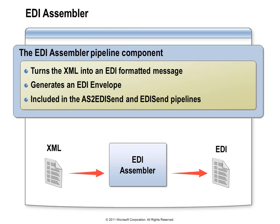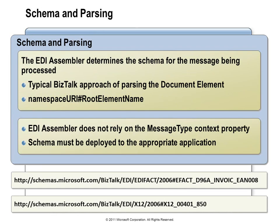The EDI assembler is the key component in those pipelines that's going to process the messages. It's going to take the XML and generate the EDI document, responsible for any envelope creation that needs to happen. That EDI assembler component is included in the AS2 EDI send pipeline and the EDI send pipelines included with BizTalk Server, but you can also put it into your own custom pipelines. When a message arrives at that assembler, it's going to be an XML message, and the assembler is going to look at the message and determine the schema by examining the namespace within the XML document, doing typical BizTalk resolution, and finding the schema to perform validation and have all the metadata needed to serialize the EDI message.